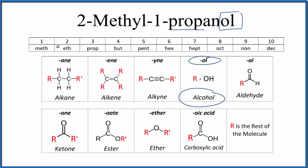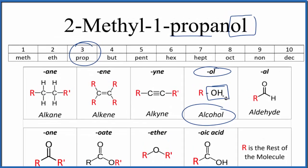For the prop, that means three. So we're going to have a chain of three carbons, and one of the carbons is going to have that alcohol group on it. So let's draw a chain of three carbons and number them.